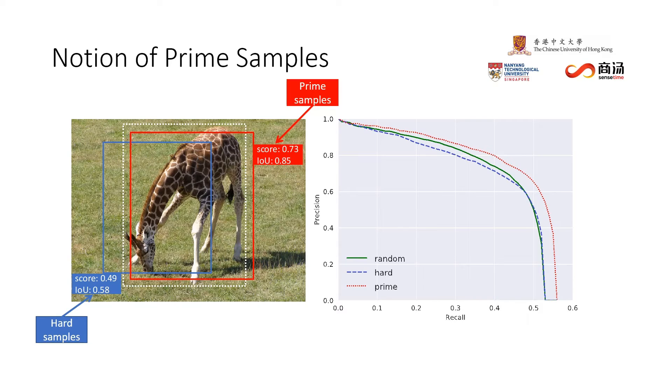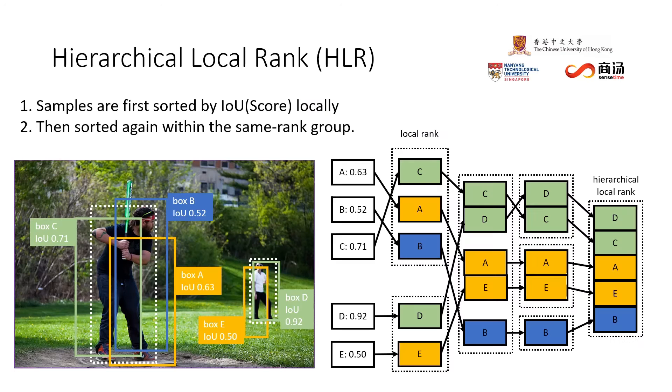So we study how different samples contribute to the performance and propose the notion of prime samples. We firstly developed a sampling method named Hierarchical Local Rank to rank the importance of samples and then apply an importance-based sampling rating scheme.